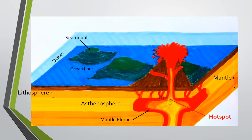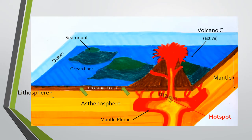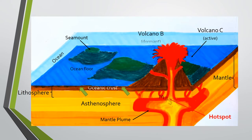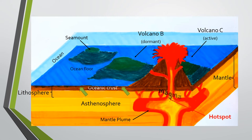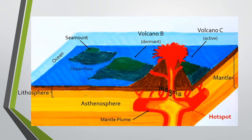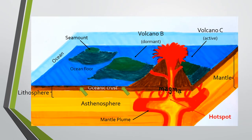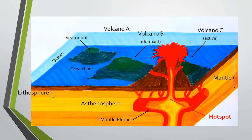In this figure, Volcano C is at the top of the hot spot, that is why it is an active volcano. Volcano B is classified as a dormant volcano since it has moved away from the supply of magma. Volcano C will sustain its activity until after 10,000 years of no eruption, when it can be declared an extinct volcano just like Volcano A.